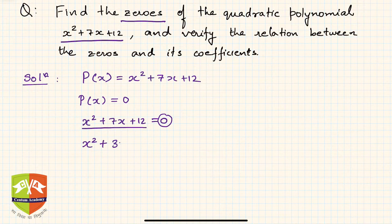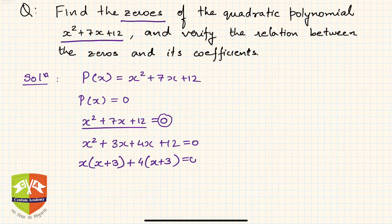If you see, I can write this as x² + 3x + 4x + 12 = 0. Now x can be taken common from the first two terms: x(x + 3) + 4(x + 3) = 0. Hence, it is (x + 3)(x + 4) = 0.